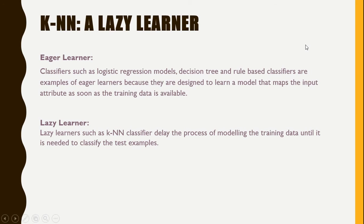There are multiple applications of KNN classifiers, such as credit rating and many other classification problems. One of the most important roles it plays is in the imputation of missing values. In the upcoming videos, we are going to see how we can use the concept of KNN for the imputation of missing values.